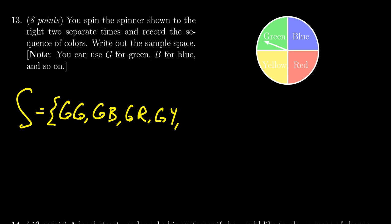You could also get blue first. So you could get blue-green, blue-blue, blue-red, blue-yellow.